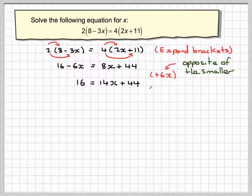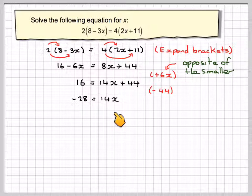The opposite of adding 44 is to take away 44 from both sides. So 16 take away 44 is minus 28, and on this side I'm just going to have 14x, and that 44 will disappear.